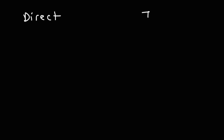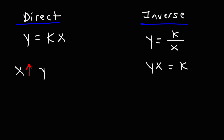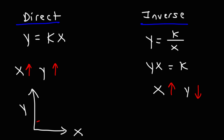Now let's talk about variation. There's direct variation and inverse variation. For direct variation, the formula is y equals kx. For inverse variation, it's y equals k over x, which can also be written as y times x equals k. Here k is the constant of variation. In direct variation, when x goes up, y goes up — it's a linear relationship. For inverse variation, when x goes up, y goes down, producing a curved graph.